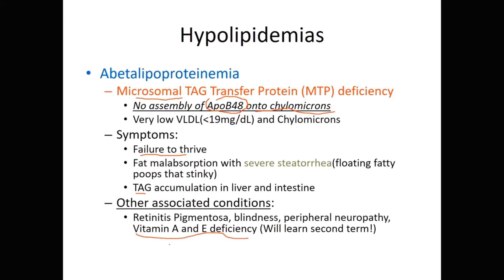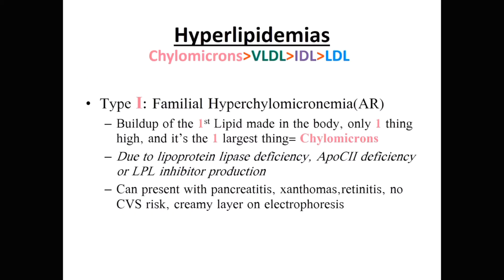Vitamin D can be absorbed or produced from the skin and kidneys, so as long as that pathway is working you can still get some vitamin D. Vitamin K, however, requires fat absorption, so you have to be careful with that one. You'll learn all those deficiency details in term two.